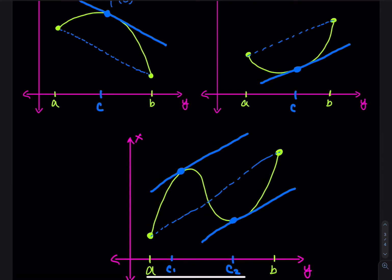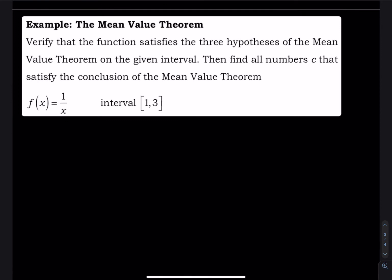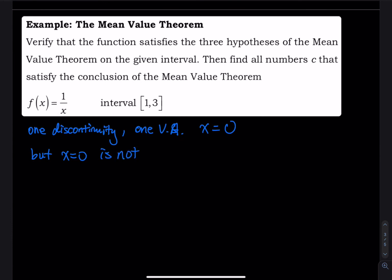Now let's look at an example. I want to verify that f(x) = 1/x on the interval [1, 3] satisfies the hypotheses of the Mean Value Theorem. First, note that 1/x has an x in the denominator, so there is a discontinuity — a vertical asymptote at x = 0. However, x = 0 is not in the interval [1, 3], so we do not need to worry about it.